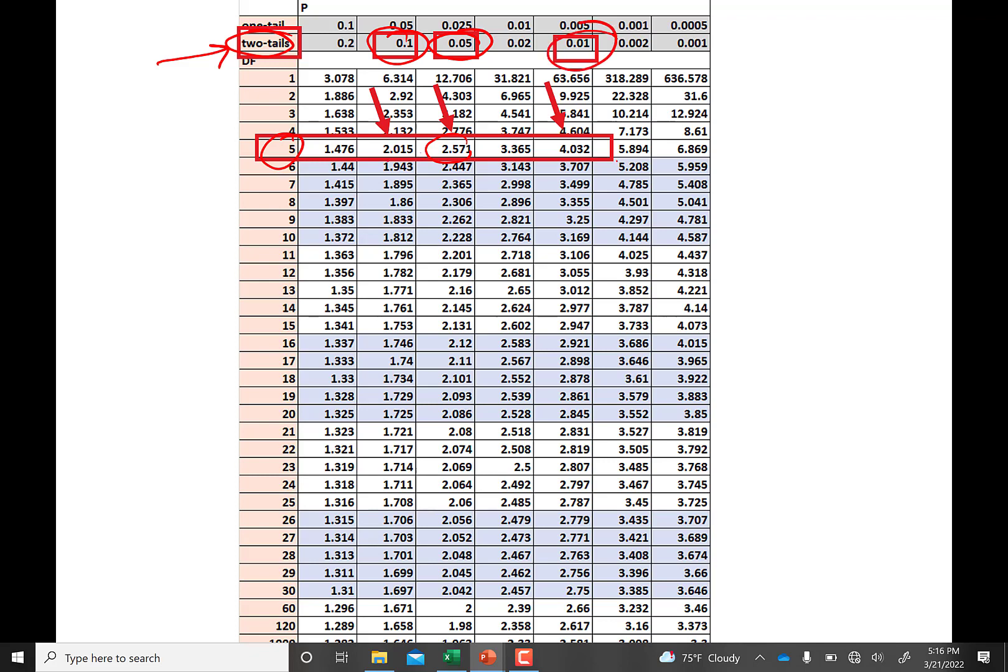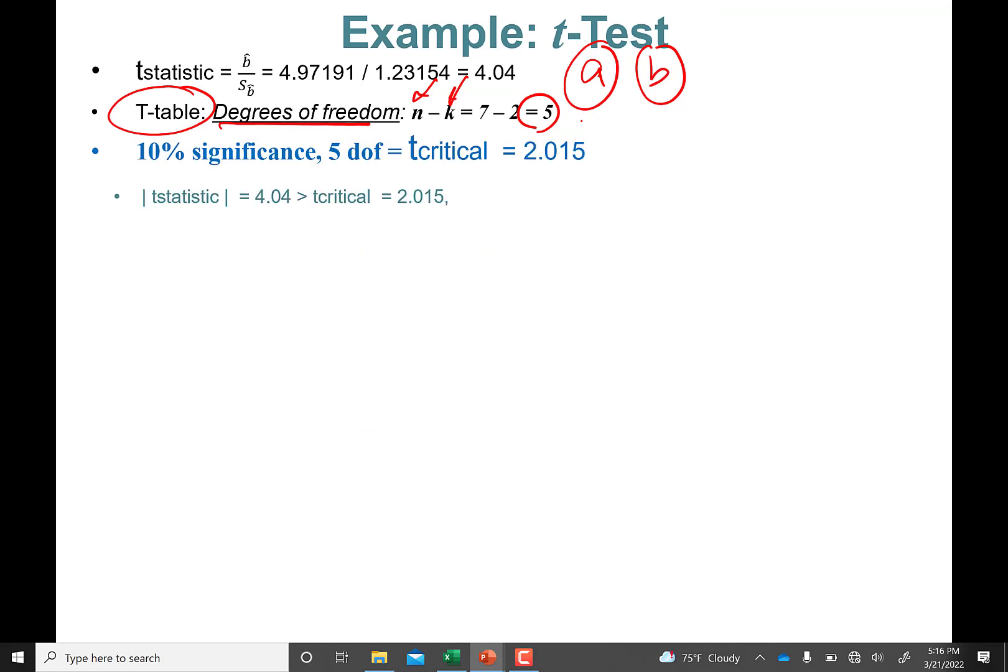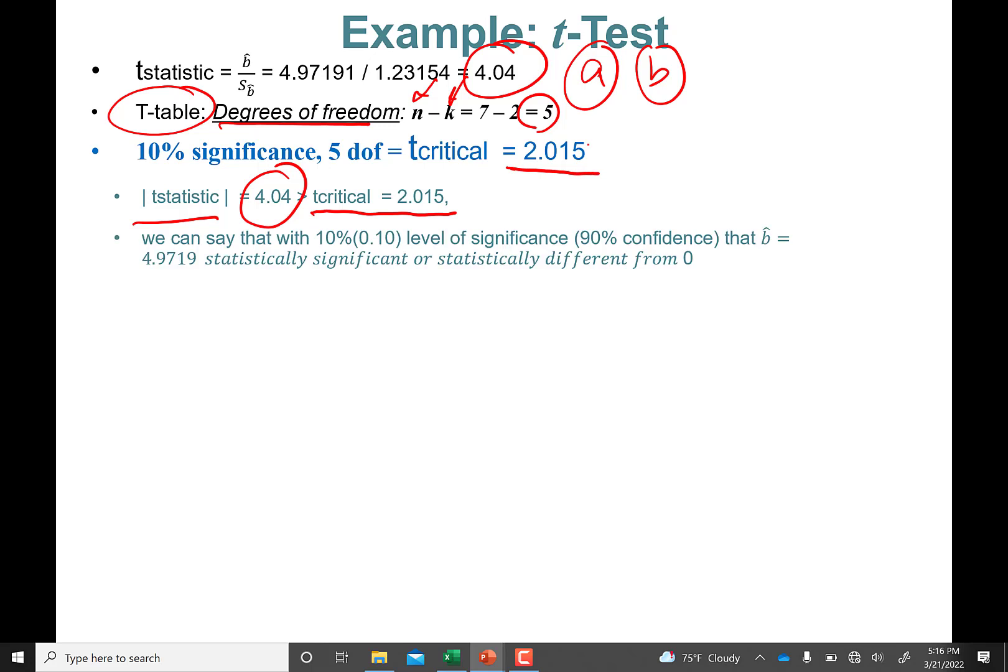One percent significance: 4.032. So the t-statistic in absolute value is 4.04, which exceeds this critical value 2.015. So you can say that with 10% level of significance, or 90% confidence—the same thing—beta 4.97 is statistically significant or statistically different from zero. Excellent.